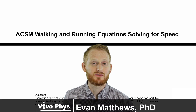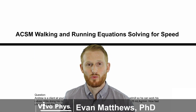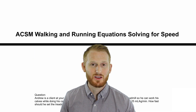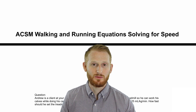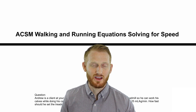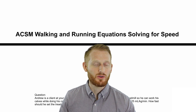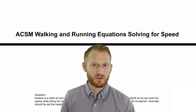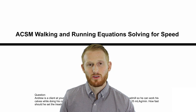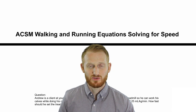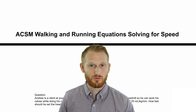Hi, I'm Dr. Ivan Matthews. I'm going to be showing you how to use the ACSM walking and running equations in order to calculate the speed that the treadmill needs to be set at, when you already know the grade that the treadmill will be set at, and you know the oxygen consumption rate that the exercise bout requires.